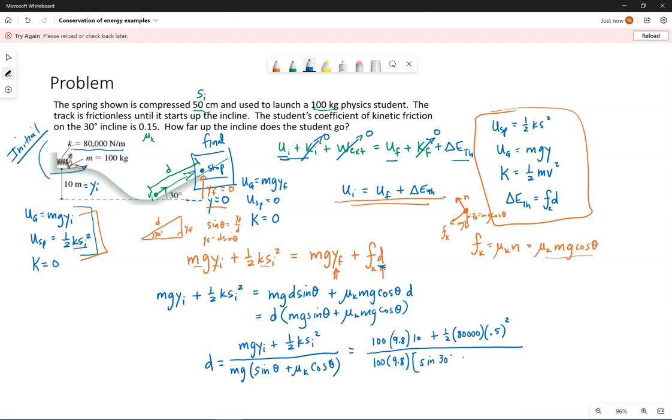Plugging in in the bottom, our angle is 30 degrees, our coefficient is 0.15. So this is what I get to plug in.